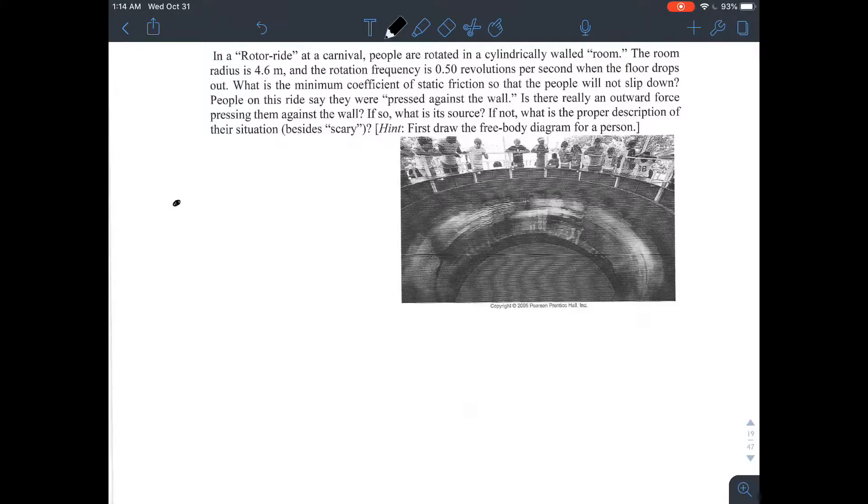There's the center of this rotor ride and the distance between that and the wall is 4.6 meters. That's the radius. The diameter then would be double that. And if we don't worry about the diameter actually, what's the path traveled? How much distance is traveled? Because we can get velocity equals distance over time.